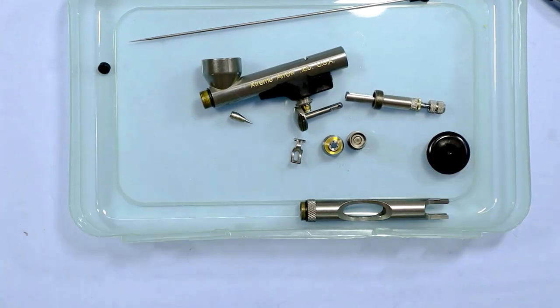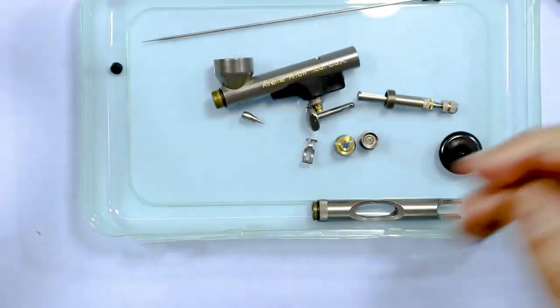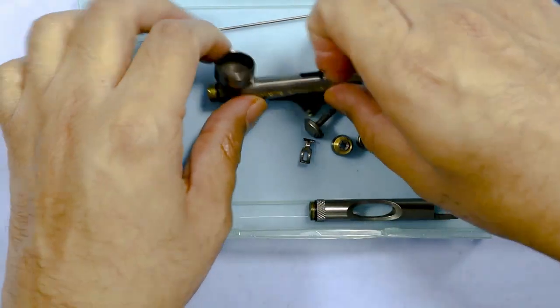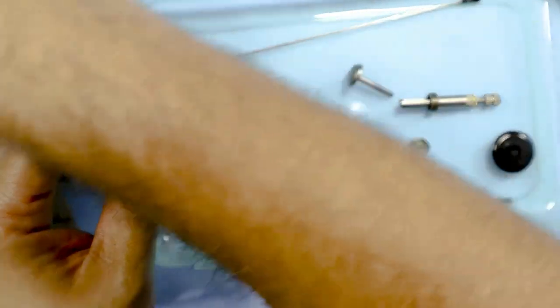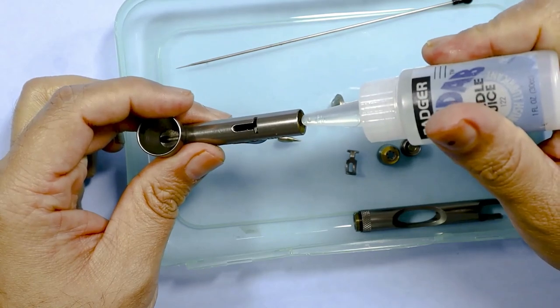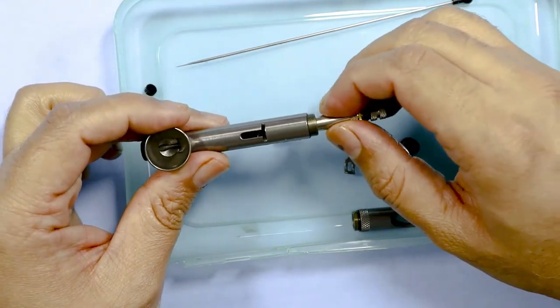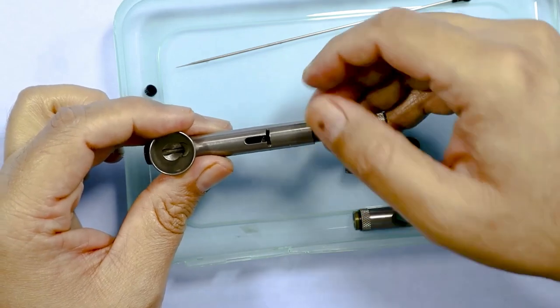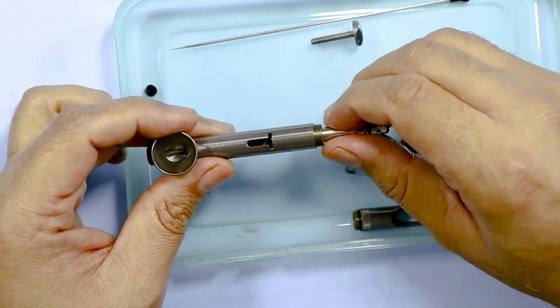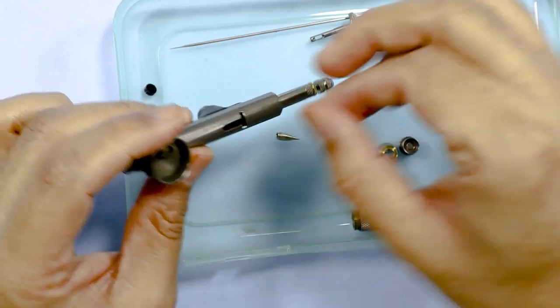Now I recommend when you disassemble your airbrush when you first get it home, when you reassemble it, use some lubrication. The reason is you have no idea how long this airbrush has been sitting, so it's good to lubricate everything to make sure everything works well. So when I put this airbrush back together, all of the parts I'm going to lubricate just to get everything in a nice good state for my airbrushing later in the video.